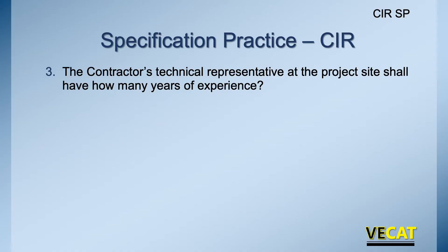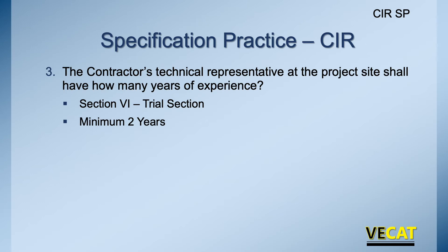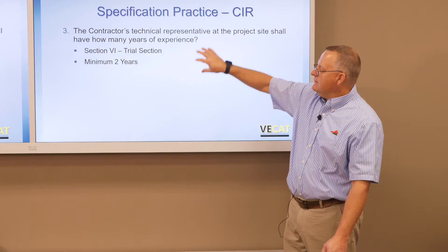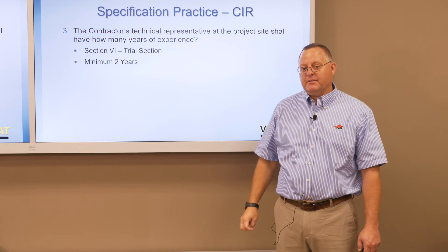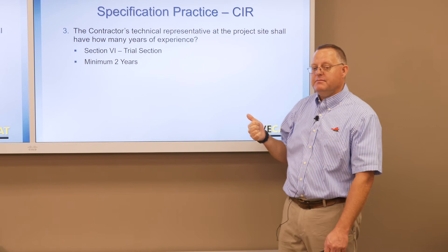For the contractor's technical representative — looking in Section 6, Trial Section — it's a minimum of two years of experience. This person may be called upon if the first trial section fails and we're unable to get density. Whether it's someone from the company, a manufacturer's rep, or an outside consultant, they need to have two years of experience to meet that requirement.